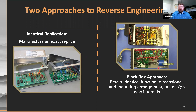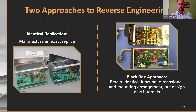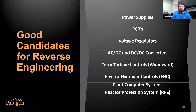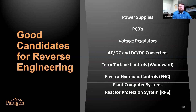I like how it also highlights how we're thinking about the future maintainability of these systems when we're going through reverse engineering. Through all those years of experience, we've learned to make it easy on yourself the next time when you need to replace that capacitor. Give us a highlight on some good candidates for reverse engineering — it's a question we get a lot from customers. When we're talking about I&C items, there's really nothing that we can't reverse engineer. We just have to make sure some of it comes down to an economic decision.